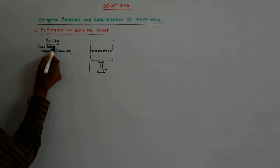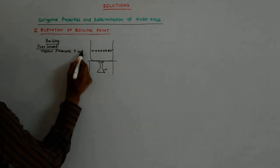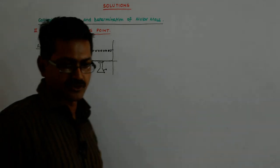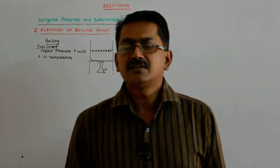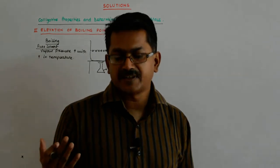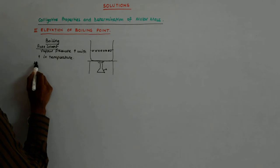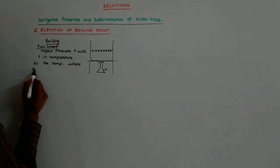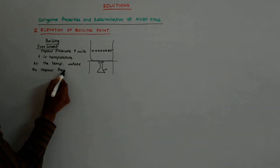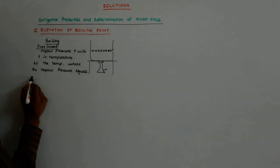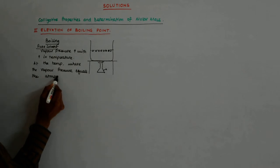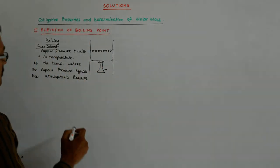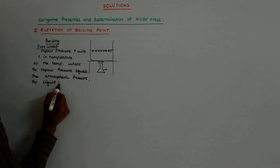For a pure solvent, the vapor pressure increases with increase in temperature. A point comes where the vapor pressure equals the atmospheric pressure, and at that temperature the liquid — the pure solvent — begins to boil.